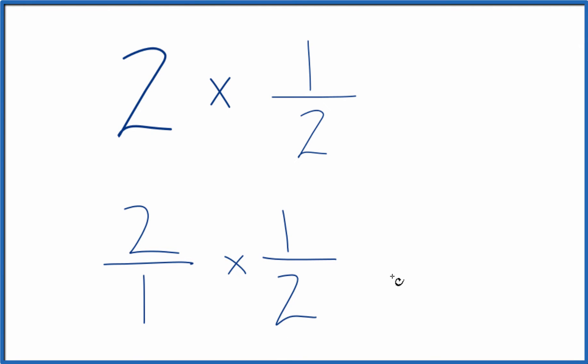When we multiply fractions, all we need to do is multiply the numerator and then the denominator. So two times one is two. One times two is two. And two divided by two, that's just one.